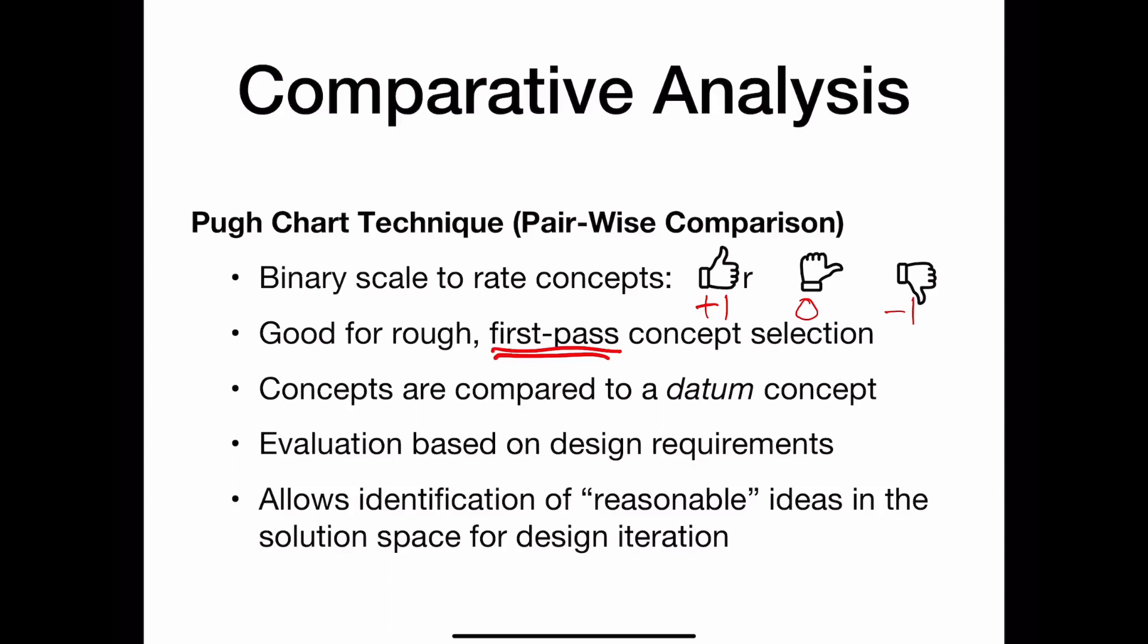A key component of a Pugh Chart is that every design is compared to some datum. And a datum is just a fancy word to say that this is the object we're all comparing against. Maybe there's a product in the market that is the best for your particular solution, and you're comparing against it. Maybe the datum was your previous prototype, and now you're comparing new iterations against it. The simple concept is that the datum is the thing that all of your other concepts get compared to.